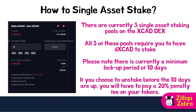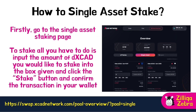Single asset staking means you only stake one asset token to earn rewards, unlike LP farms where you must pair two assets. There are currently three single asset staking pools on the XCAD DEX, all requiring XCAD to stake. Note there is a minimum 10-day lockout period; if you unstake before 10 days you will pay a 20% penalty fee. Go to the single asset staking page via the link provided, input the amount of DXCAD you would like to stake, click the Stake button, and confirm the transaction in your wallet. You will then earn daily rewards, and you can claim them at any time or let them accumulate and claim in batches.